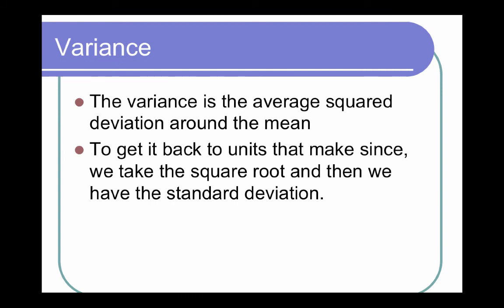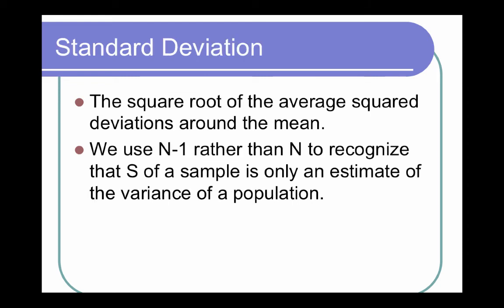So the variance is the average squared deviation around the mean, and then to get it back to units that make sense, we will take the square root, and then we have the standard deviation. So I want you to just remember that those formulas are very similar. We use that n minus 1 rather than n to recognize that a sample is just that. It is an estimate of the variance of a population. If it were the population, then we would just divide it by the n.